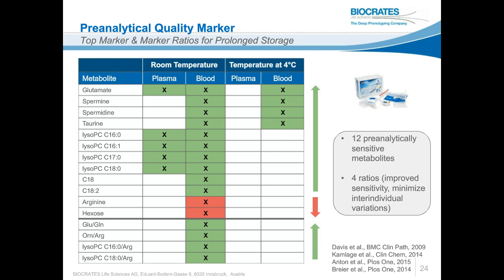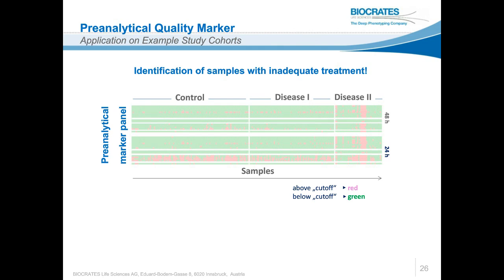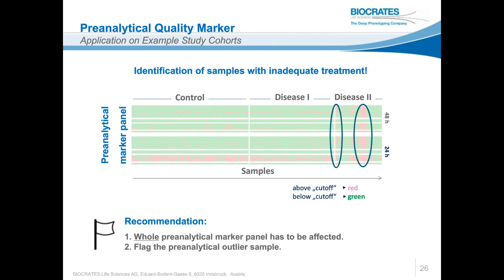In a preliminary study, taurine was identified as a blood-specific marker showing increased concentration over time in both male and female donors, with no concentration change at 4°C or room temperature in plasma. Applying this marker panel to a larger study, samples where the whole marker panel showed concentrations above a specific cutoff for 24 or 48 hours were flagged as pre-analytically critical. The whole marker panel must be affected in order to flag a sample as pre-analytically critical, and it should then be checked whether this effect can be explained by the metadata.